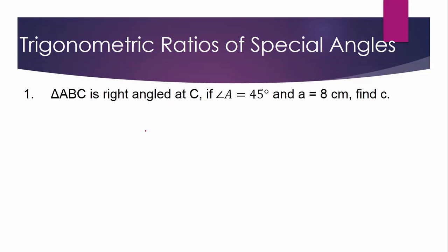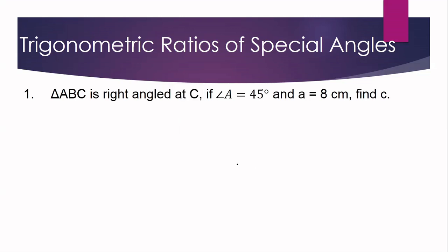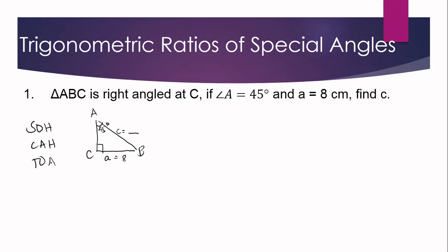Now let us consider the following examples. We have triangle ABC right-angled at C. If angle A is 45 degrees and side a is 8 centimeters, find side C. The first thing to do is to illustrate the triangle. The right angle is at C, with vertices A and B. Side a, opposite angle A, is 8 centimeters, and the unknown is side C, the hypotenuse. Using the mnemonic SOH-CAH-TOA, we identify which trigonometric ratio to use.